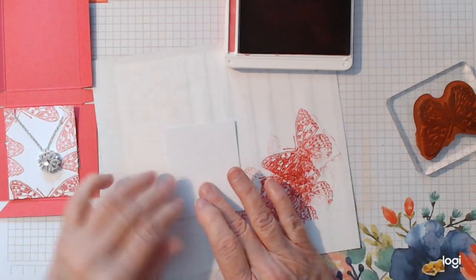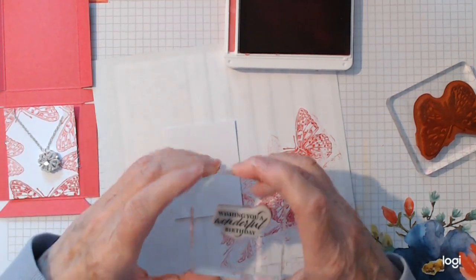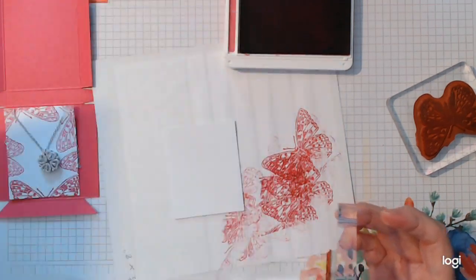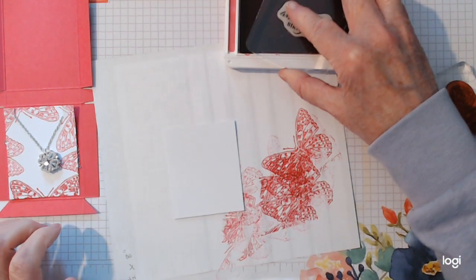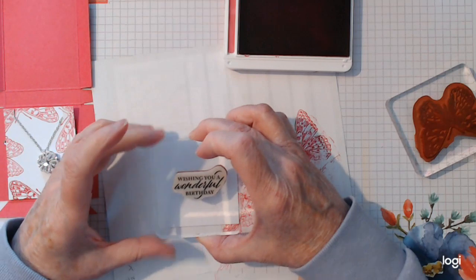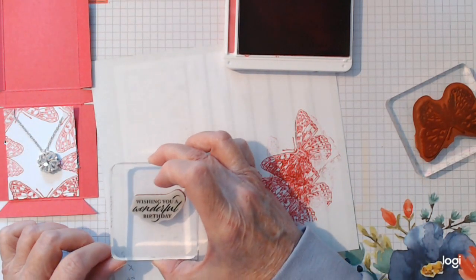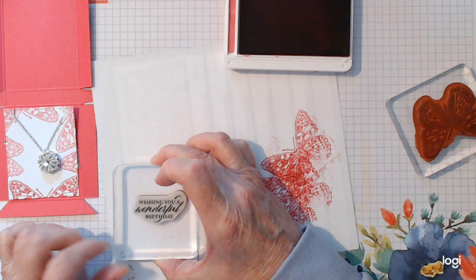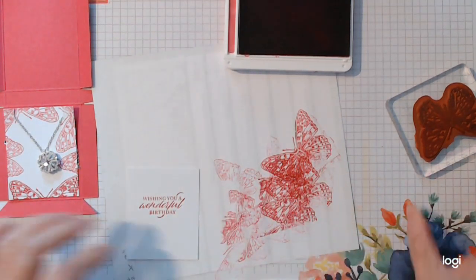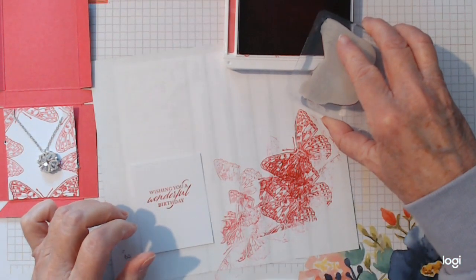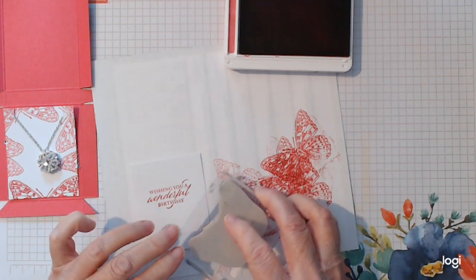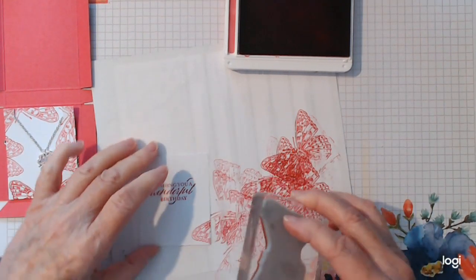So that will sit in the box like so. And now we want to stamp a sentiment here. And I've chosen wishing you a wonderful birthday. And it's from an older set. Elegantly said. Nice wee box for rosary beads or whatever for Holy Communions. Things like that.